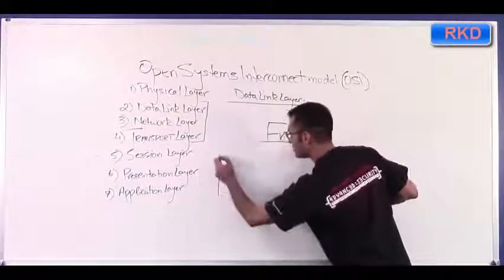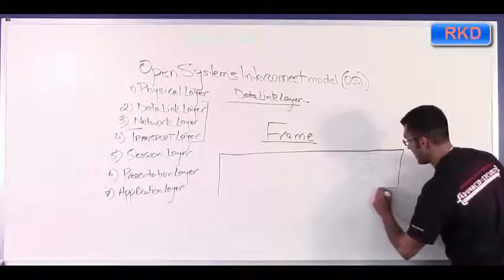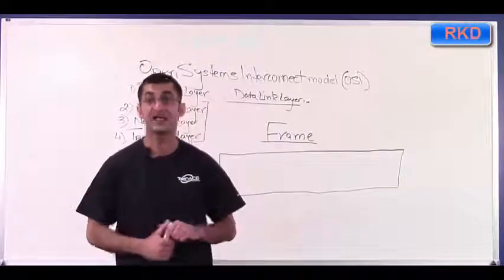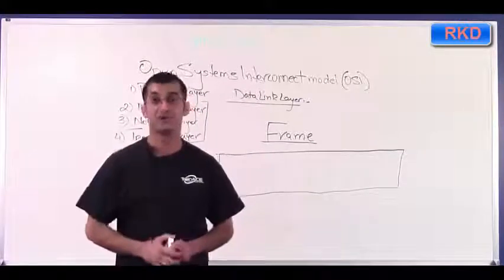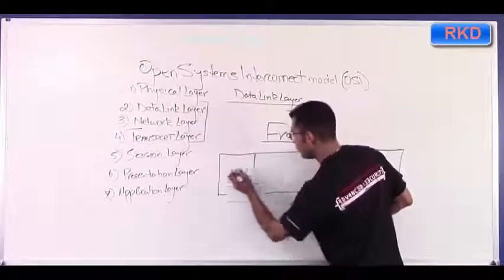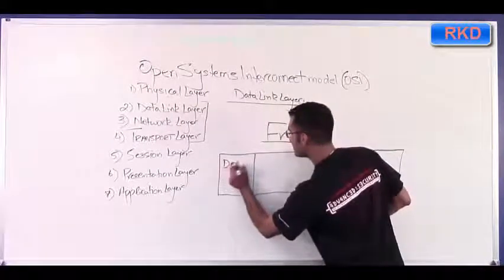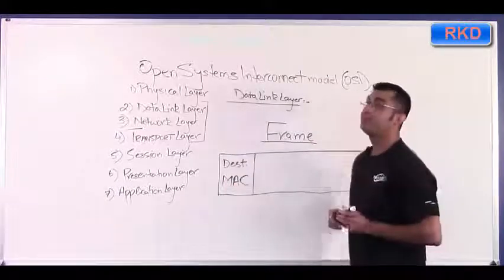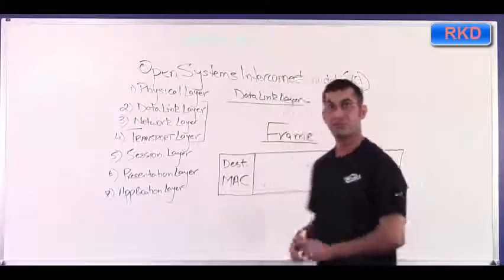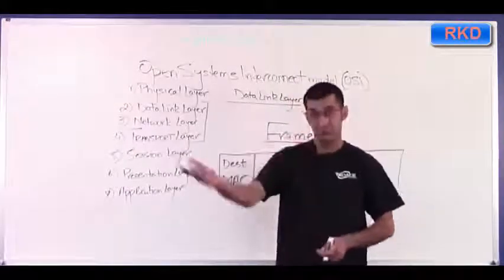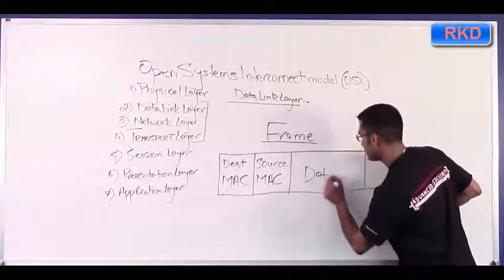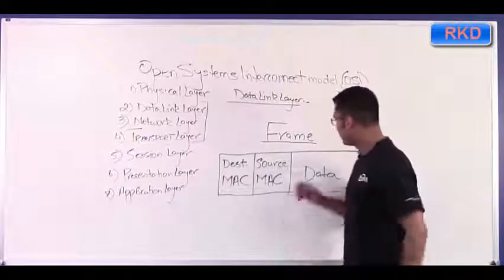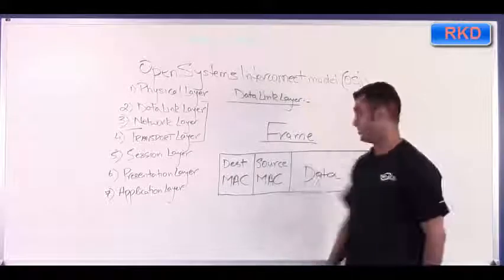Let's find out what this frame looks like. I'm going to draw a box with a word of warning — I'm only going to put the fields in this frame that are pertinent to the CCNA class. There are other fields, but you won't need those until CCNP. You will have your destination — abbreviated DST MAC — your destination MAC address, which is the MAC address of the device you're transmitting to. Then your source MAC and your actual data. You can think of the frame as your envelope and the data as the actual letter you are sending.